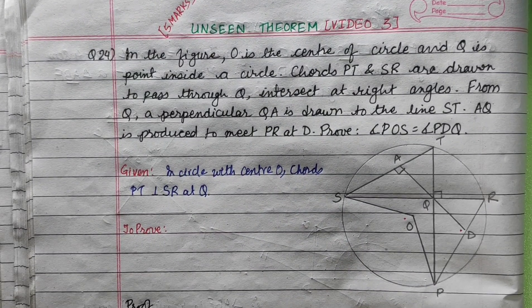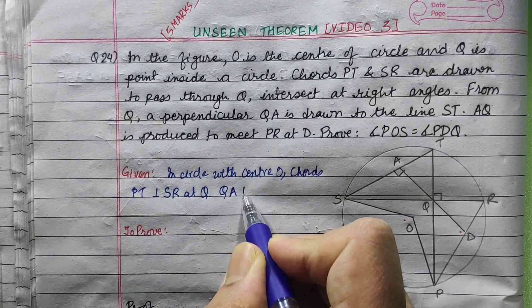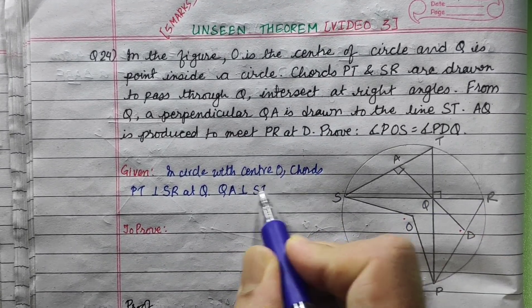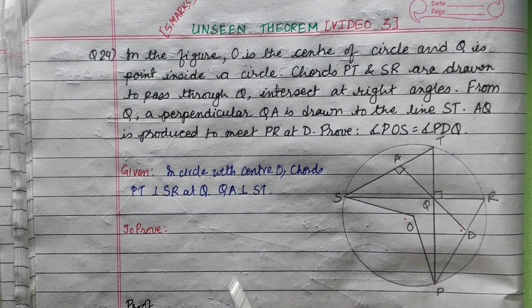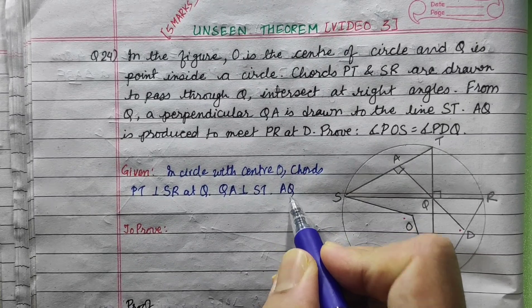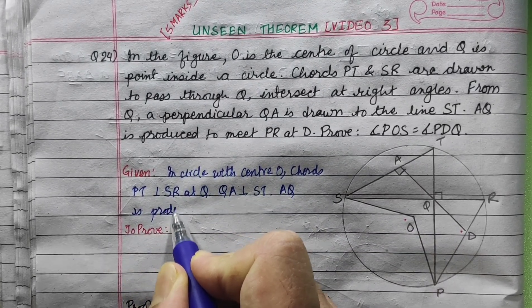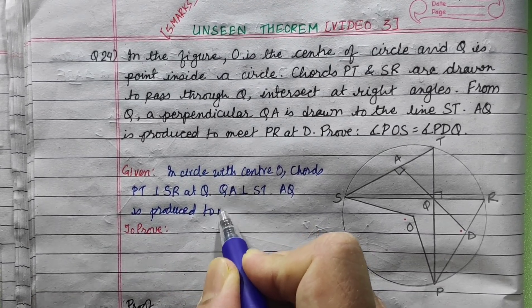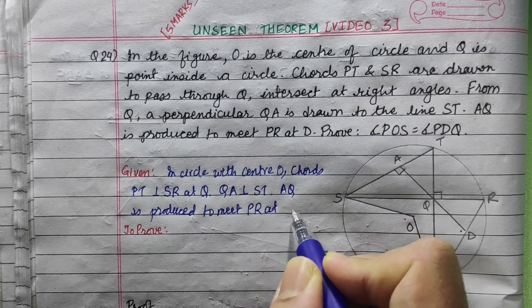QA is perpendicular to ST, and AQ is produced to meet PR at D.